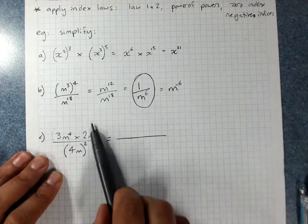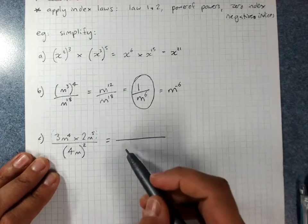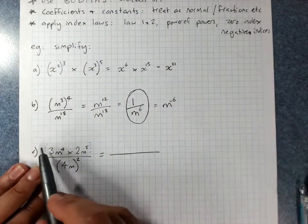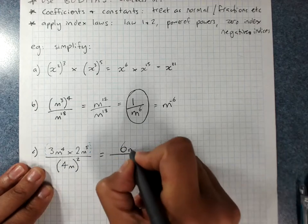So the fact that there's imaginary brackets here says I can do this whole thing at the same time as I expand these brackets because brackets first. So 3 times 2 is 6, m4 times m5 is m9.